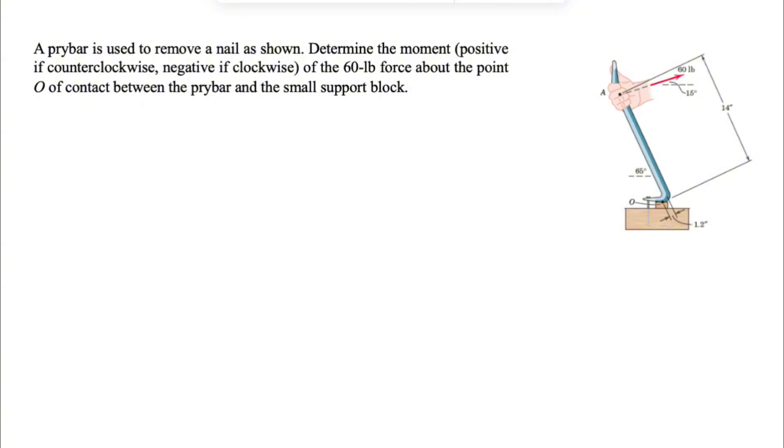So the point O, as we can see, is the black dot on the figure. If we want to solve this, we can just resolve the 60 pound force into one perpendicular to this pry bar and one parallel to it. With these two, we should be able to find the moment pretty easily.